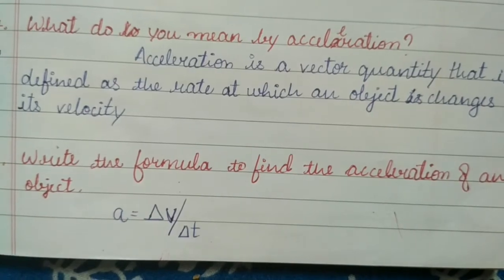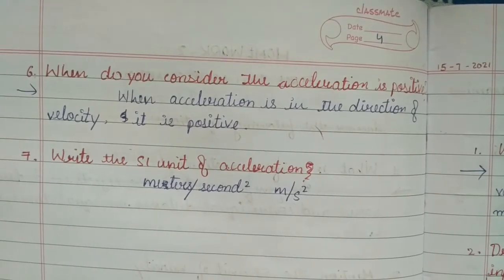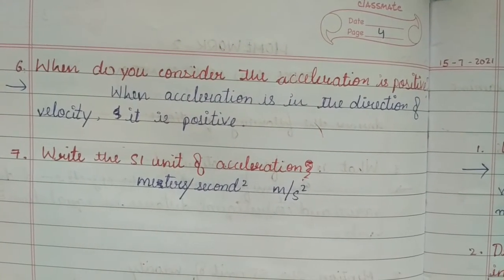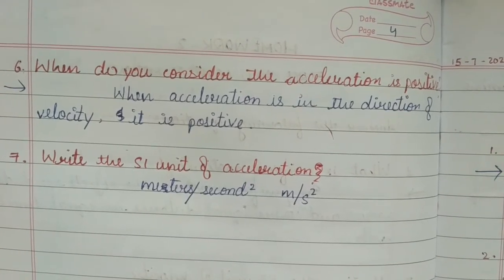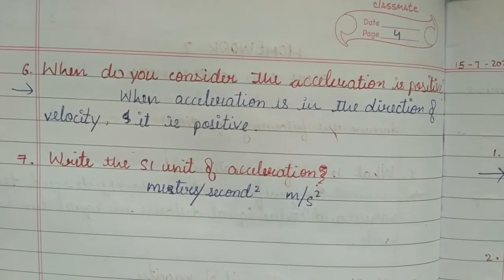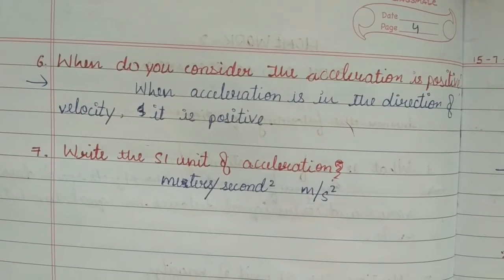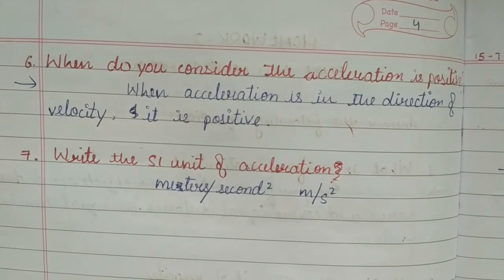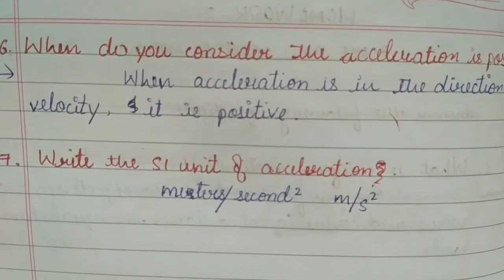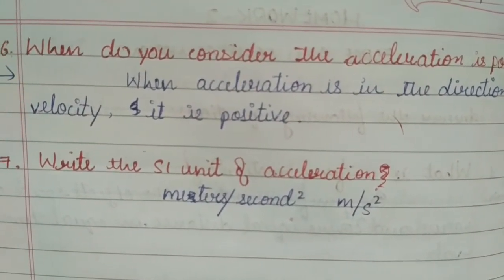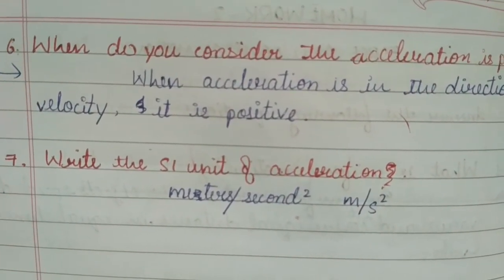When do you consider the acceleration is positive? Answer: when acceleration is in the direction of velocity, it is positive. Write the SI unit of acceleration: answer, meters per second squared.